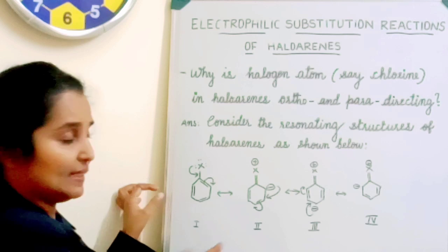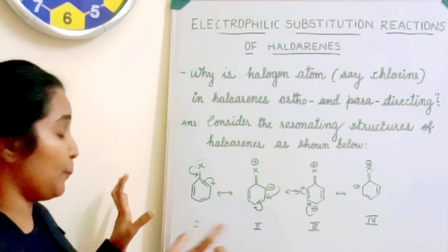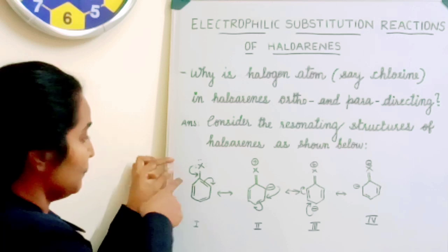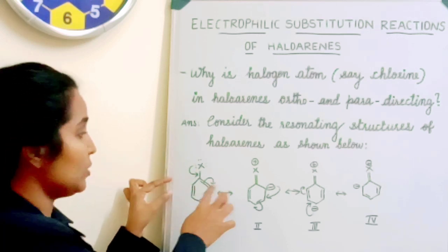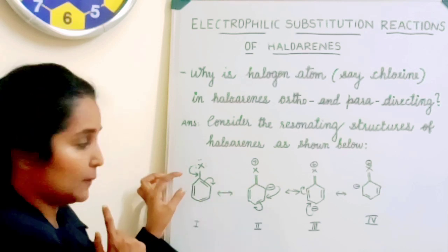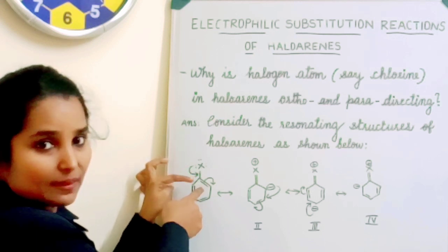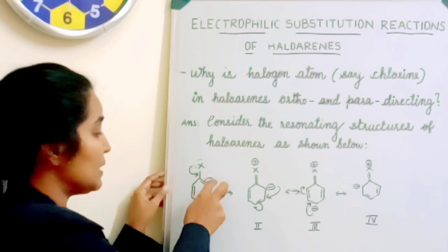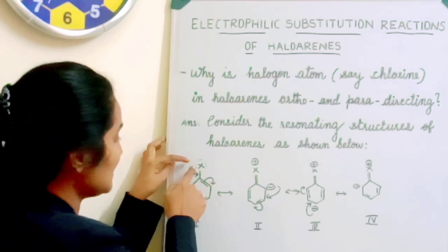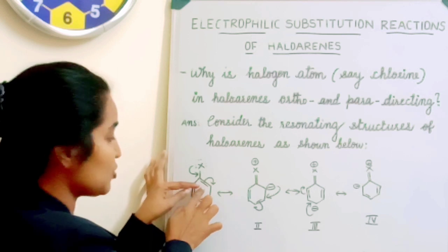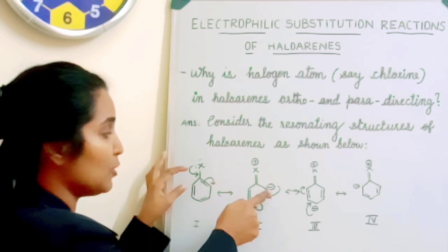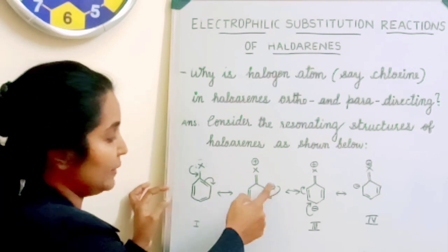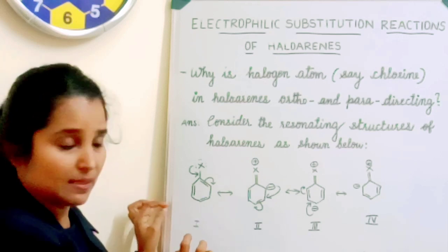The first one shows the halogen, which has electron pairs. During resonance — which is electron movement through the aromatic ring — these two electrons jump, causing this single bond to become a double bond. Since two double bonds cannot be adjacent, the electrons making that double bond jump to the next position, forming a double bond there. The electrons from that double bond then shift further, forming a negative charge that accumulates at the ortho position.